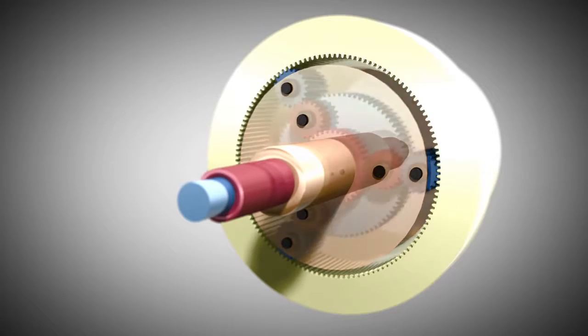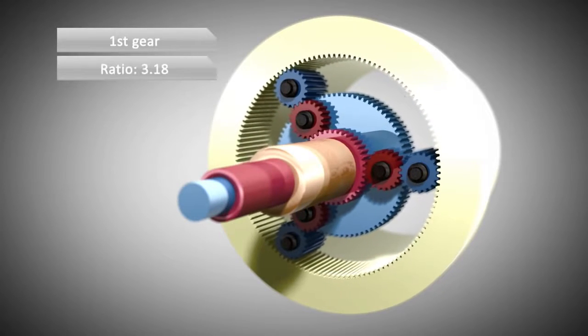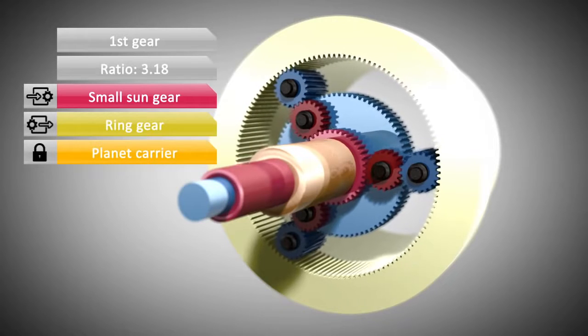In 1st gear, the small sun is driven by the torque converter, which is driven by the engine. The planet carrier is held still by a multi-plate brake or one-way clutch, so it cannot rotate. The ring gear is connected to the output and drives the wheels of the car.